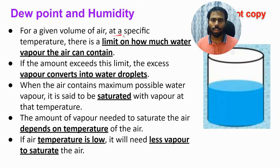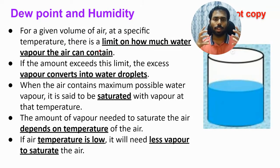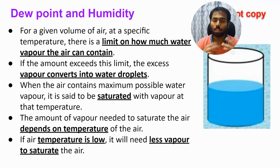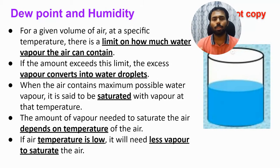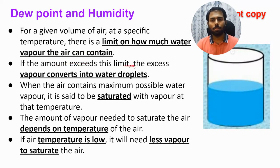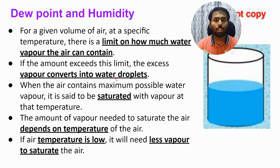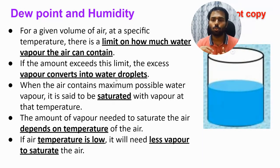For a given volume of air at a specific temperature, there is a limit on how much water vapor the air can contain. The air acts like a container. If the amount of water vapor exceeds this limit, the excess vapor converts into water droplets. So the water vapor holding capacity of air — if water vapor in the air exceeds that capacity, water droplets will start to form.